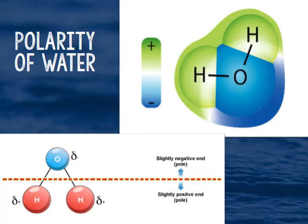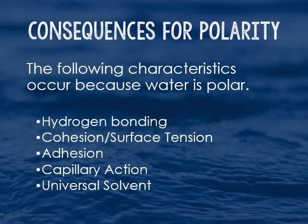As for which side is positive and which is negative: the positive end is your hydrogen and the negative end is the oxygen. You can label that on your drawing — it's something you will need to know later. This is what we use in chemistry to represent the negative and positive poles. The consequences of polarity include hydrogen bonding, cohesion, surface tension, adhesion, capillary action, and the fact that water is a universal solvent. All of these things happen because of that unequal distribution of electrons.